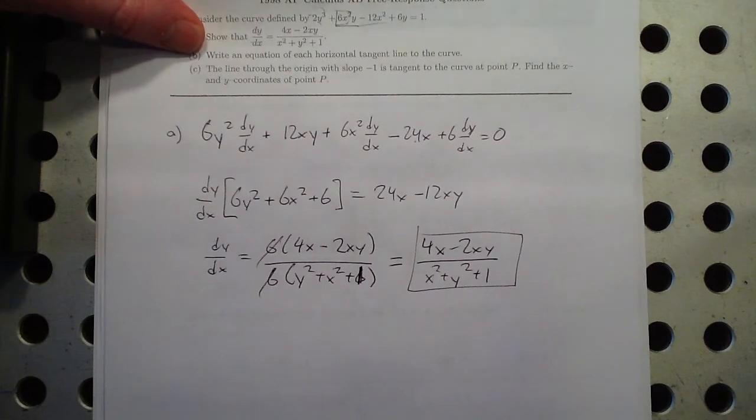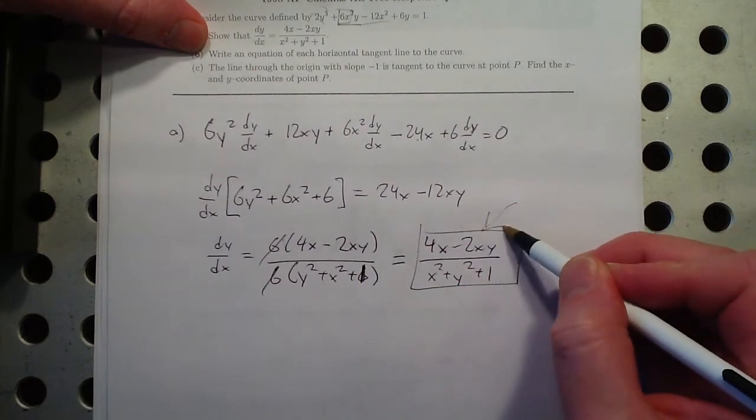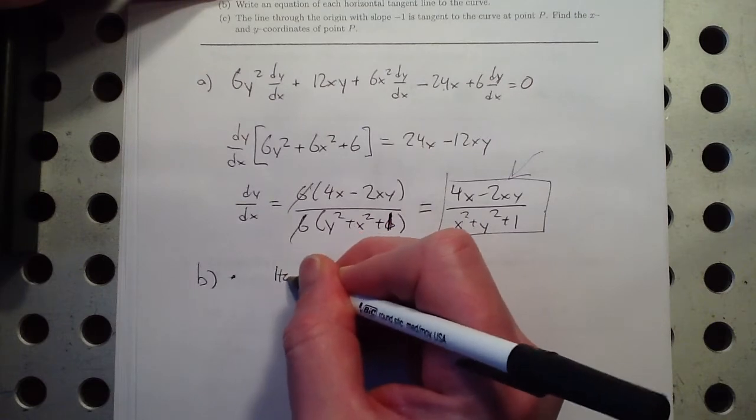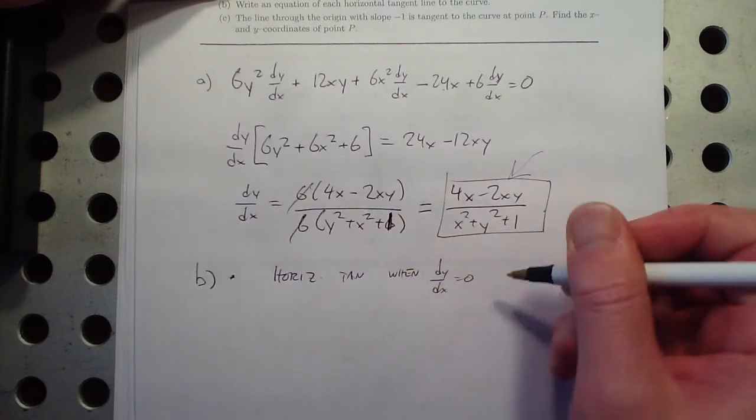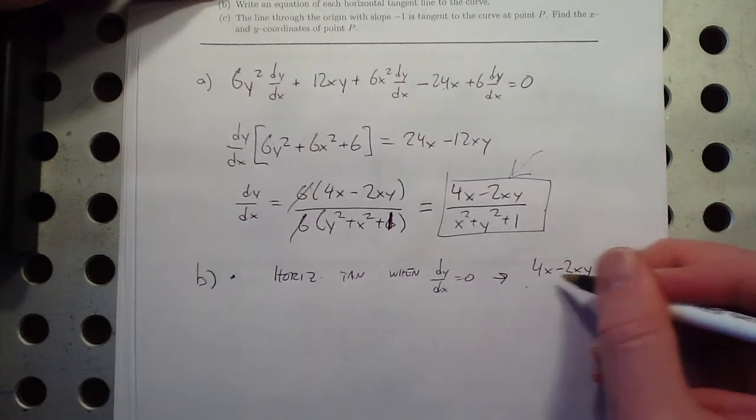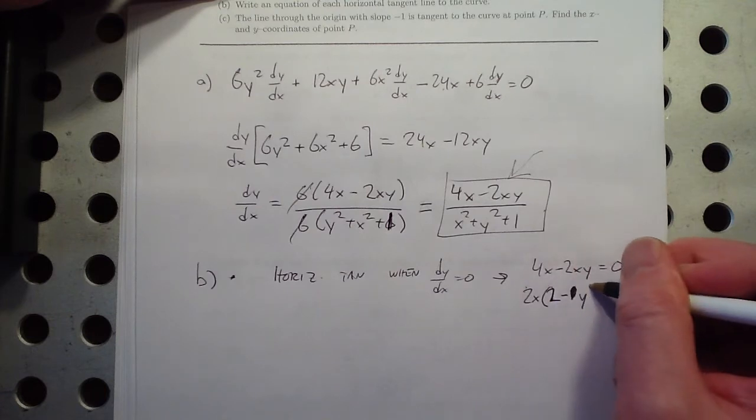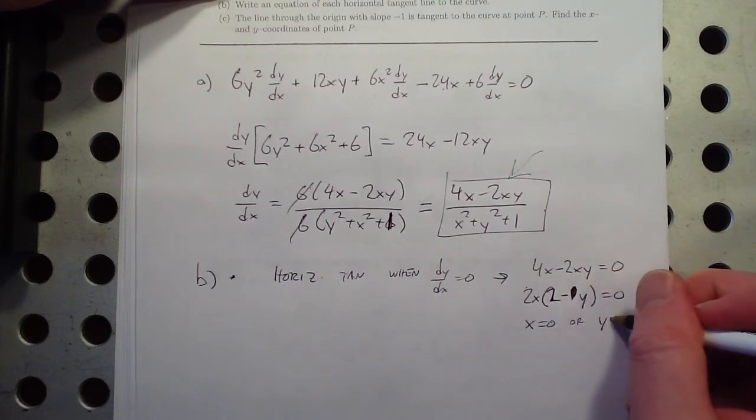Part B, write an equation for each horizontal tangent line to the curve. Well, let's see. Horizontal tangent lines are where the slope is equal to 0, and that's going to happen when the top is equal to 0. So that's going to happen when, let me write out what we're doing here, horizontal tangent when dy dx is 0. And that happens when 4x minus 2xy is equal to 0. And that happens factoring a 2x out of that, sorry, factoring out 2x, that's 2 minus y, right? So that happens when x is equal to 0 or y is equal to 2.